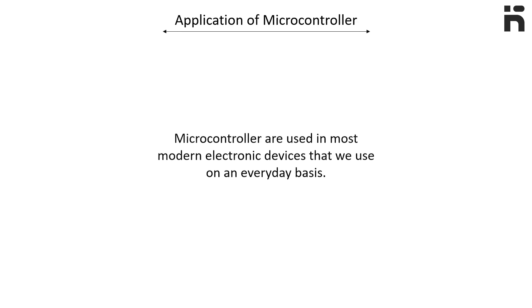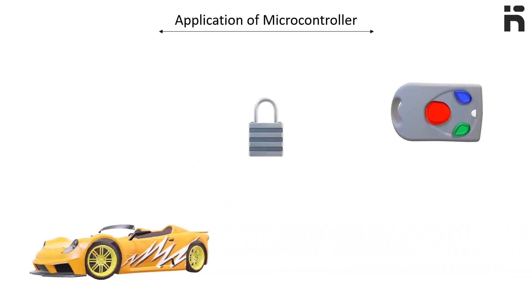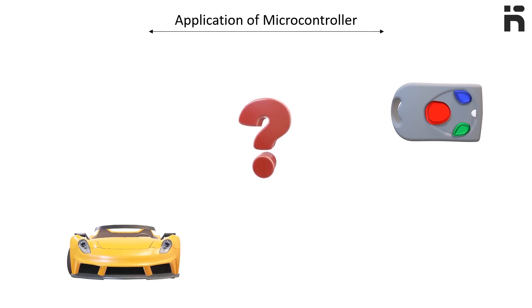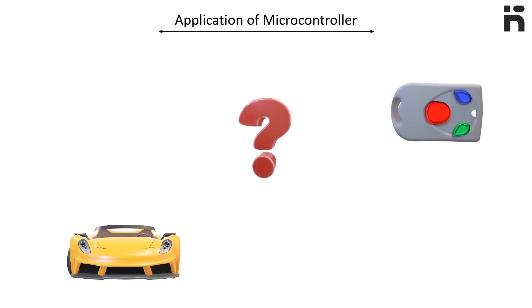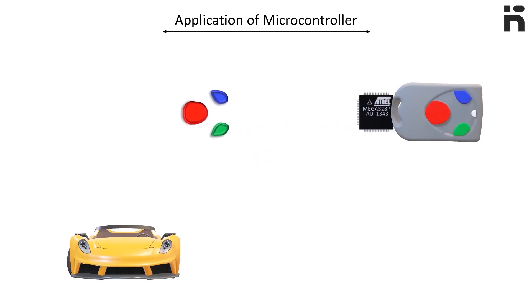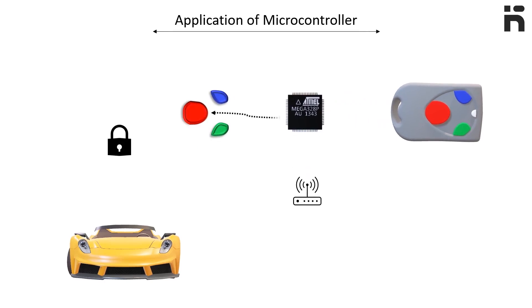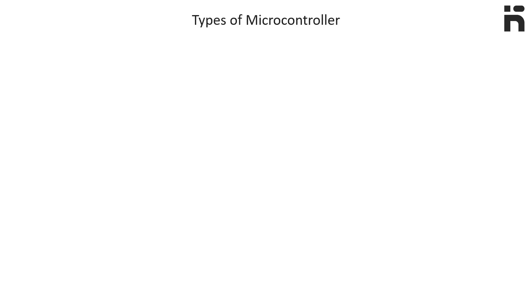For example, let's take a look at the key of your car. You press a button and the car unlocks — but have you ever wondered how this works? A car key contains at least three main components: the buttons, the microcontroller itself, and a transmitter. When a button is pressed, it sends a signal directly to the microcontroller, the microcontroller runs the specific task, and the car unlocks.